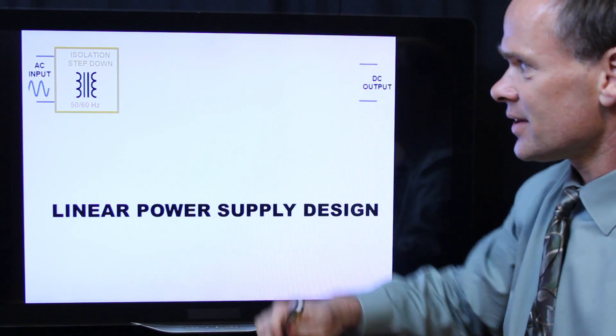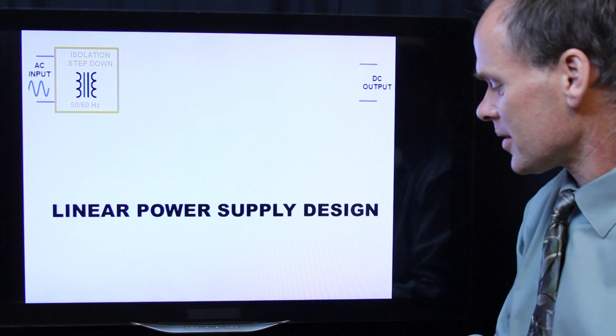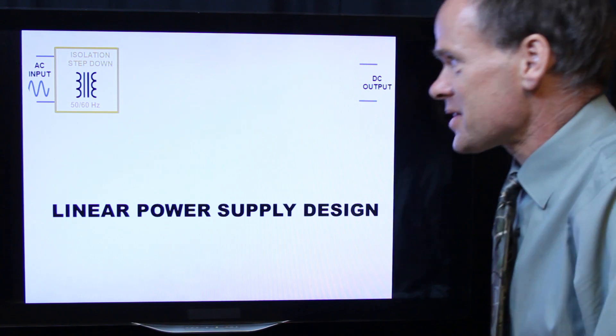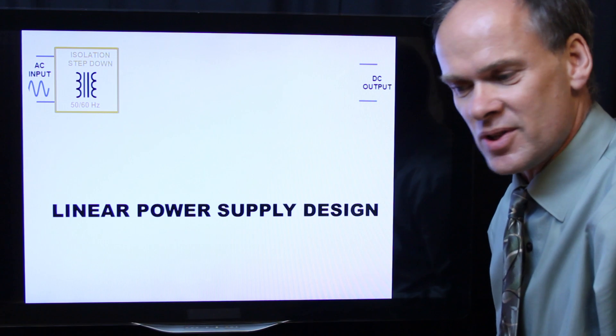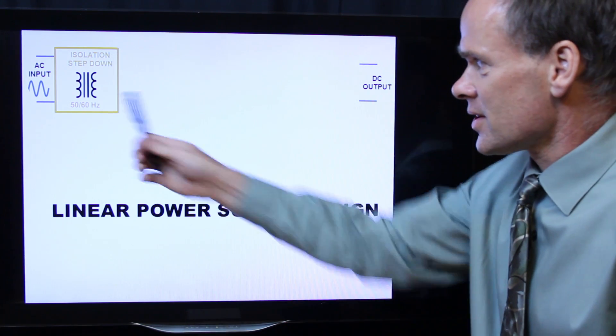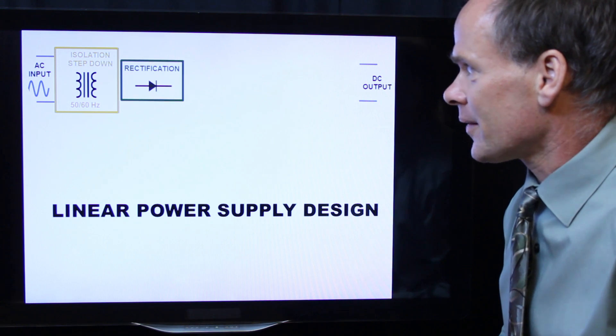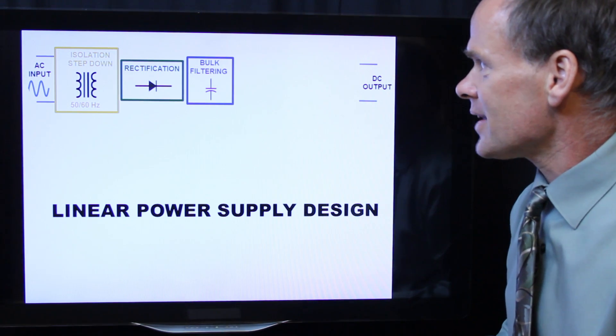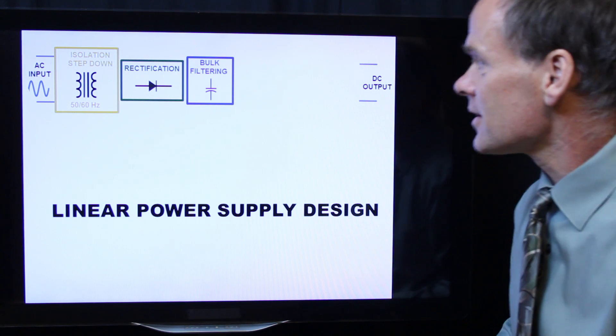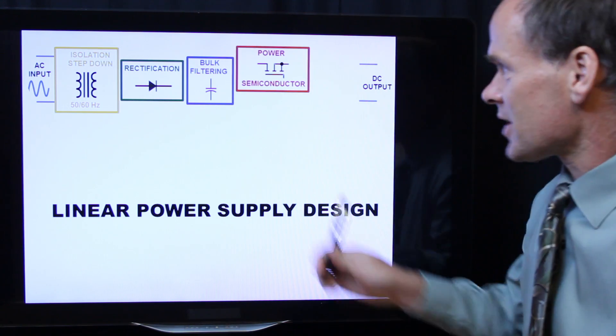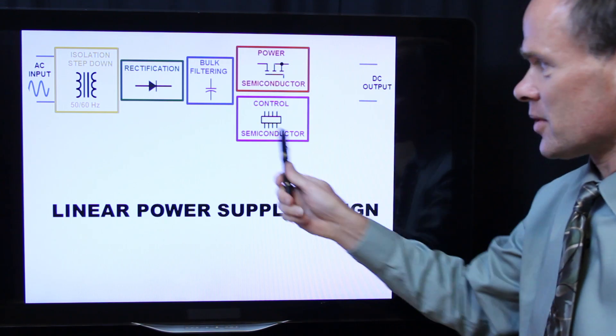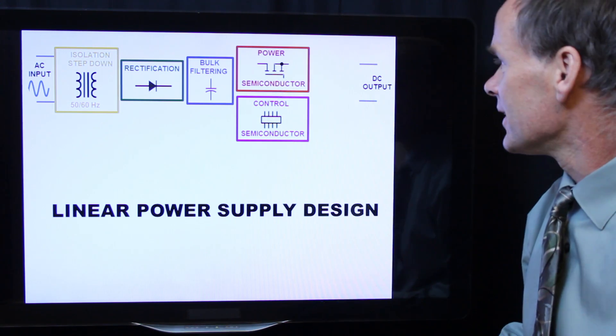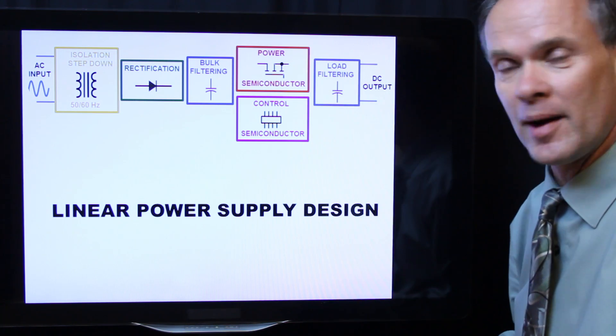Well first we start with isolation and step down. Normally step down in our transformer but of course some of you who worked with old tube circuits in the old days may have stepped up the voltage as well. But normally we step them down to a lower voltage ready for our logic chips or computer chips to use. So that'll be a 50-60 Hertz transformer. And we follow the transformer with rectification. So that converts the AC input to DC. And then we need some bulk filtering that means capacitors. And then some power semiconductors which are going to regulate the output voltage. We're going to need some control semiconductors to run these linear regulators. And then finally we'll have some load filtering on the output to give our DC output.